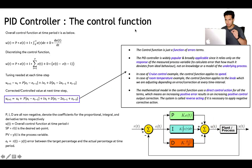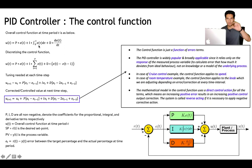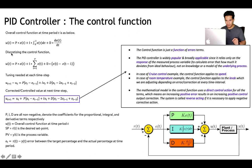Let's look at the control function mathematics. The overall control function at time t, u(t), is a function of three terms: a term proportional to the current error, an integral of the total errors until now — that is, the total corrections made so far — and the rate at which the error is changing. Discretizing this continuous form, the integral gets converted into a summation and the derivative becomes the difference between error terms at two consecutive time frames.